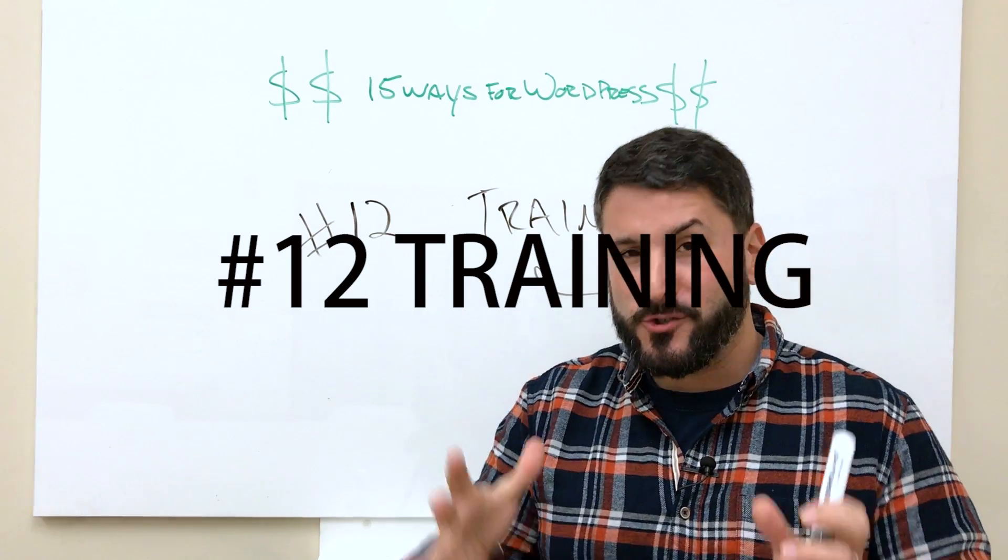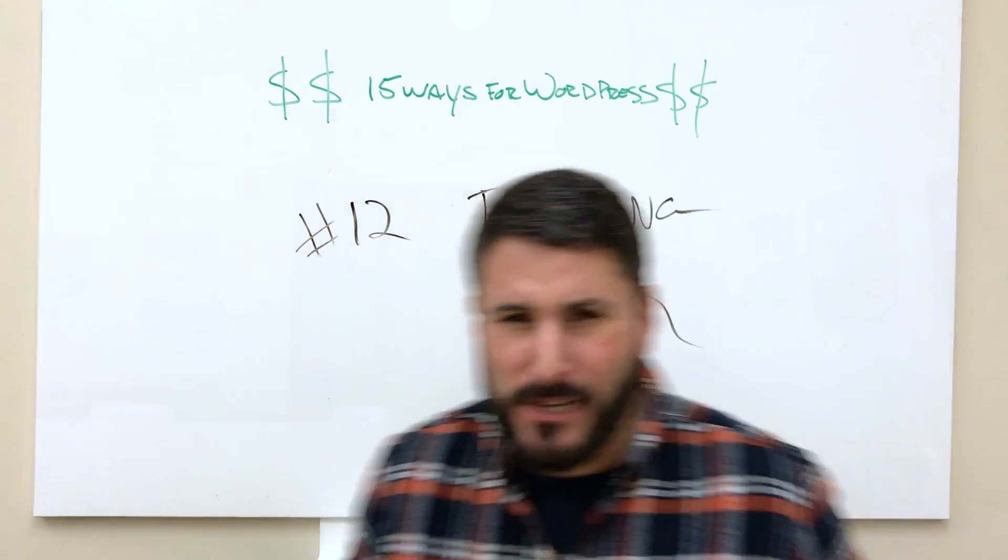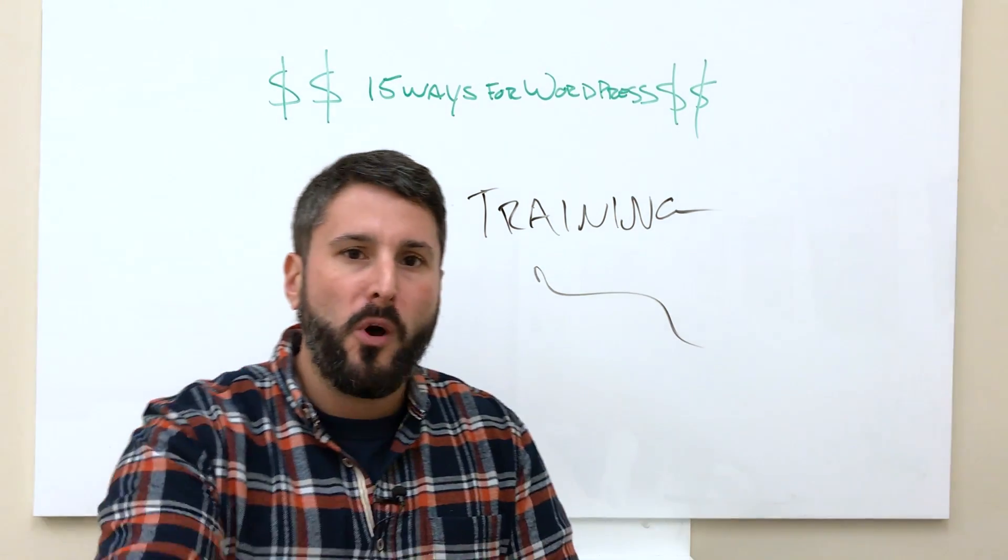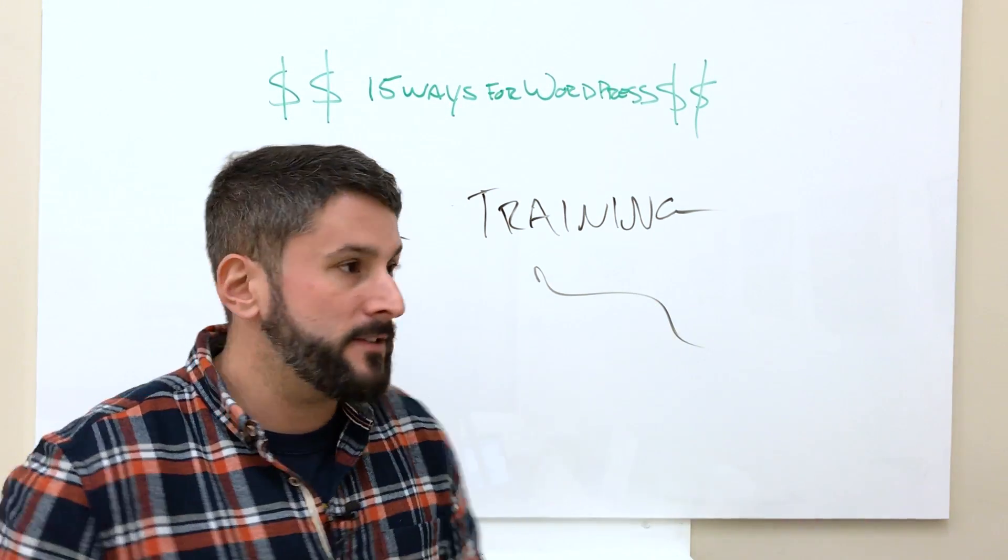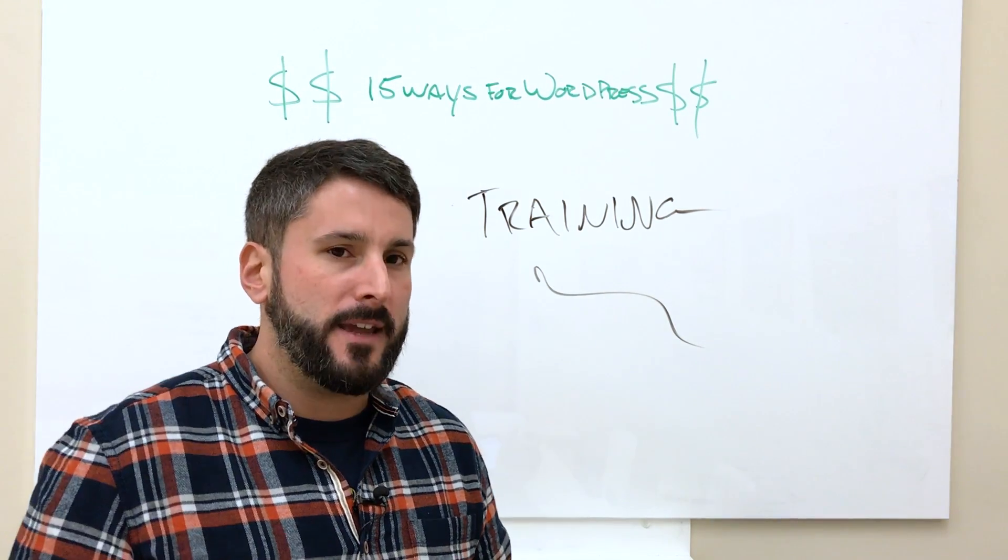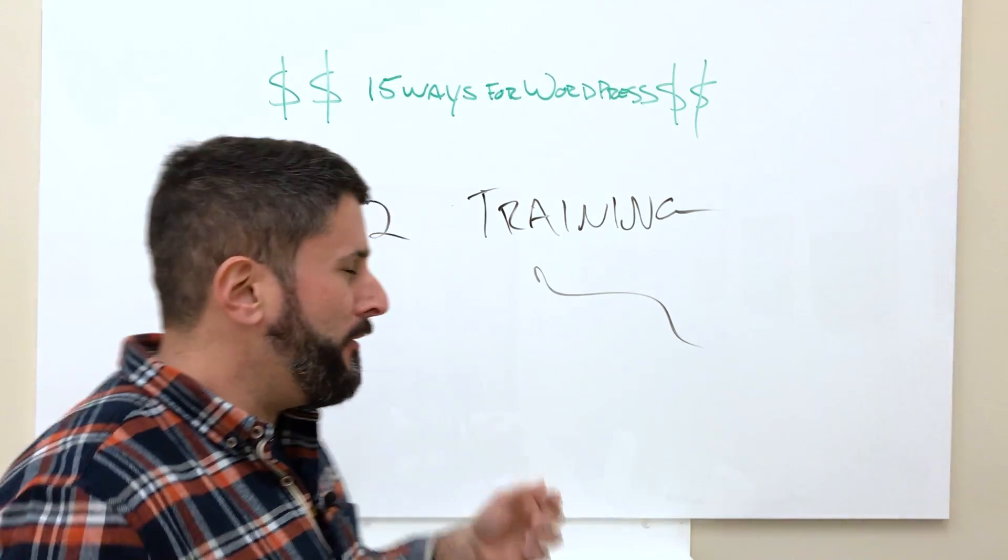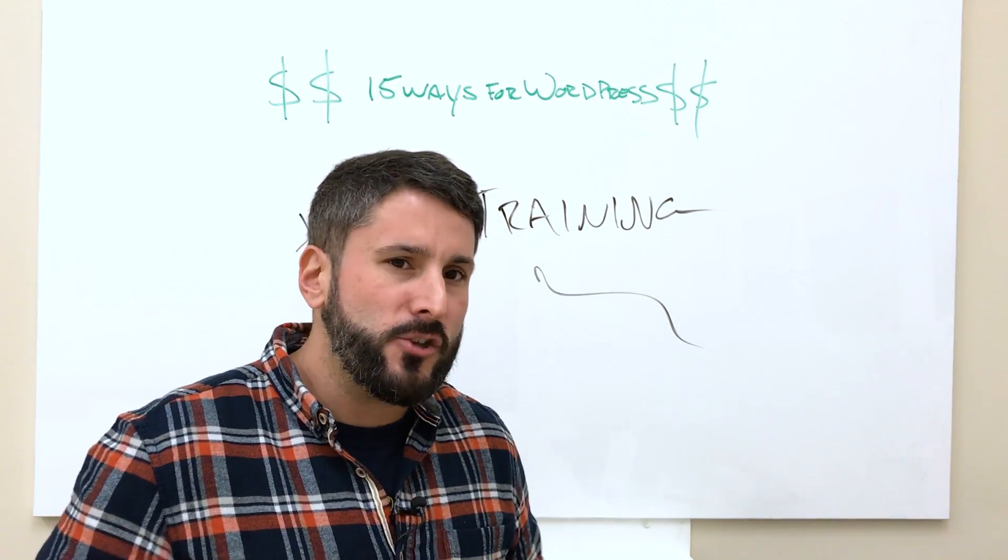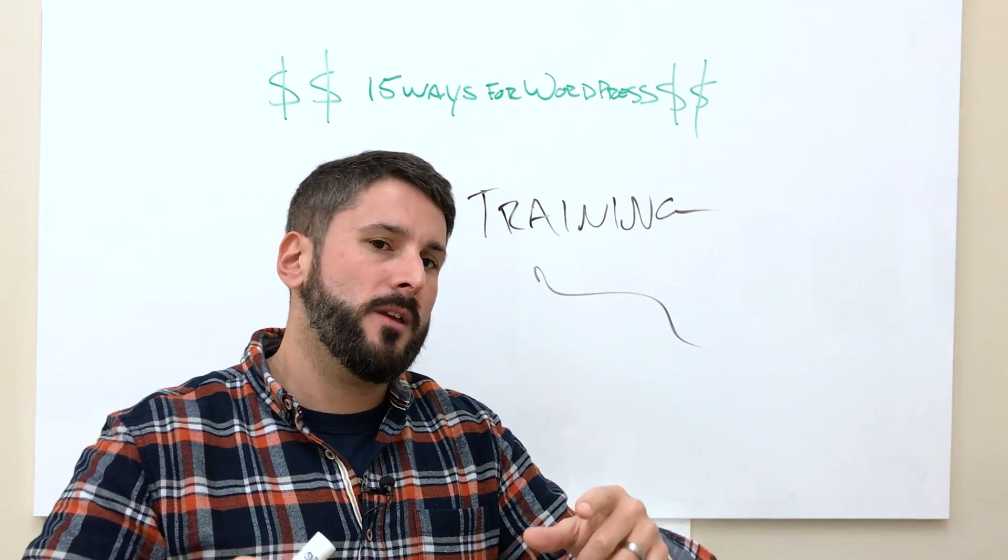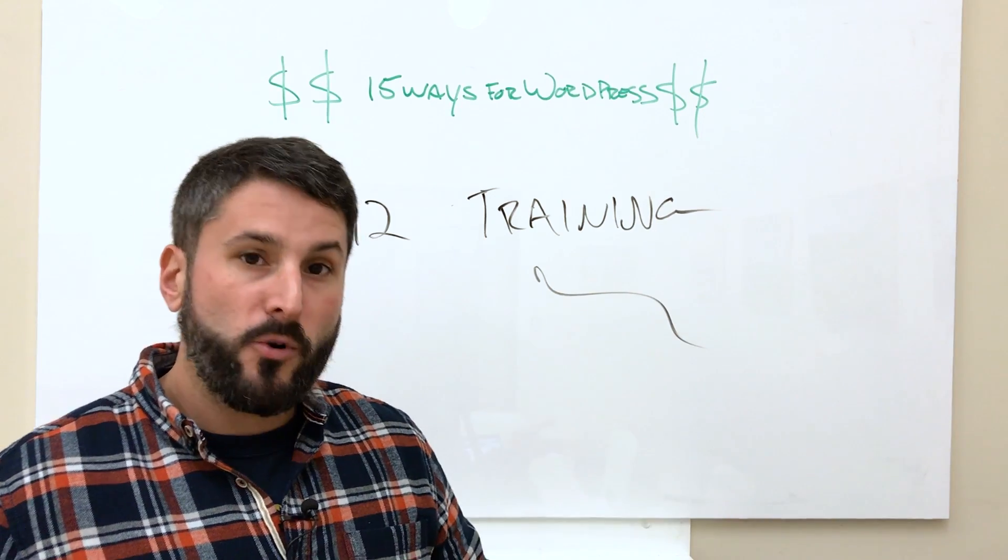Number 12, it's training. Training people how to use WordPress. Not too far off from the consulting that we mentioned at the top of the show. One-on-one training. This could be just blog training. This could be e-commerce training. This could be organizational-wide training. It could be a tutorial channel like this channel. Showing them how to use the ins and outs of WordPress and all of the different web services that connect to it. Training is our number 12 way to make money with WordPress.